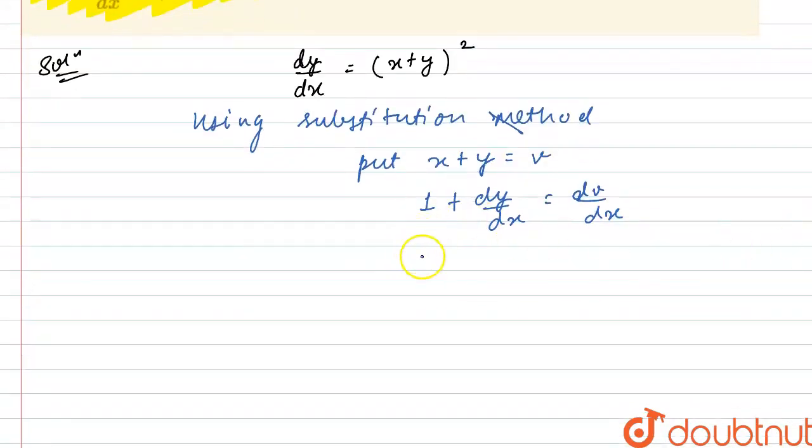From here we get the value of dy/dx as dv/dx minus 1. Now, we will put this value of dy/dx in equation number 1. So, equation number 1 will change to dv/dx minus 1 equals v squared.